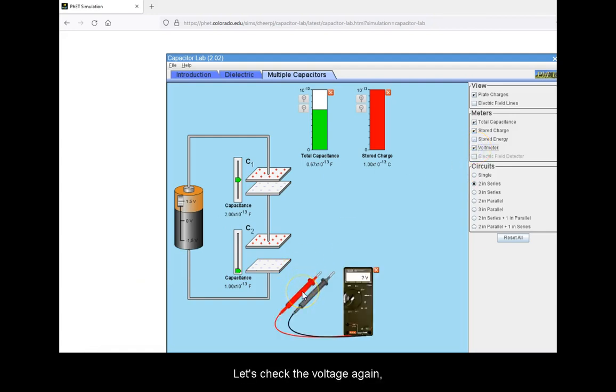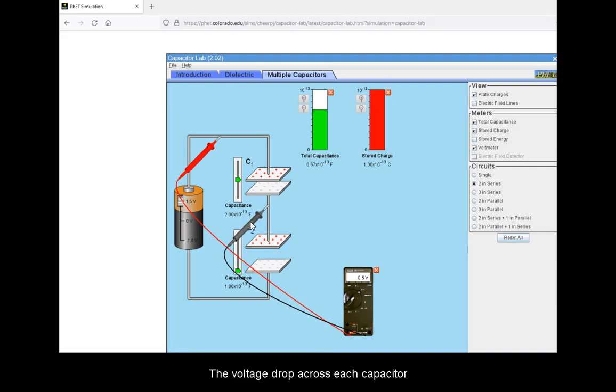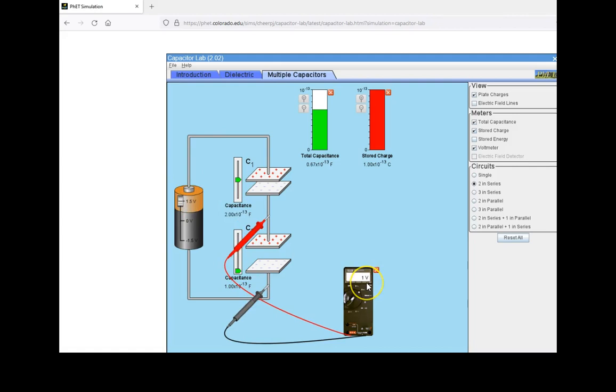Let's check the voltage again to verify that the total drop is still equivalent to that of our battery. The voltage drop across each capacitor is now different, but their sum is still that given by the voltage of the whole circuit.